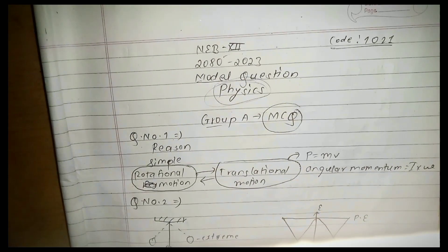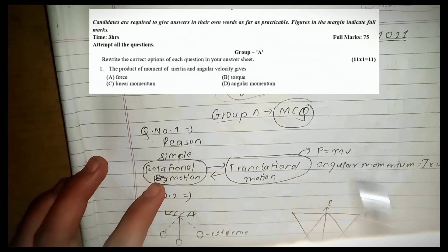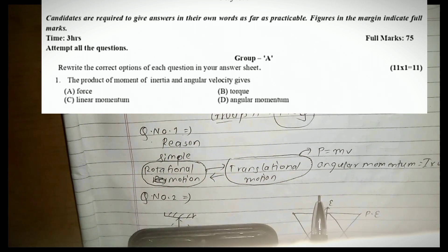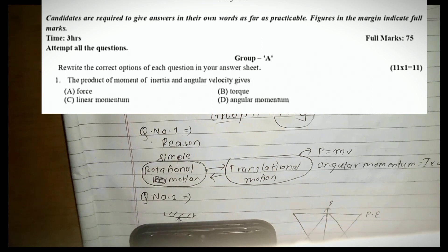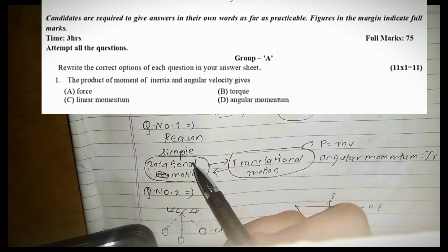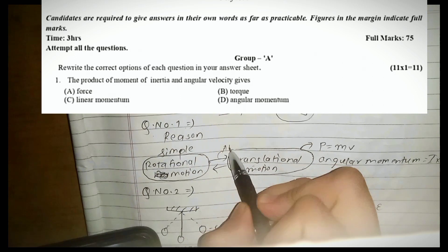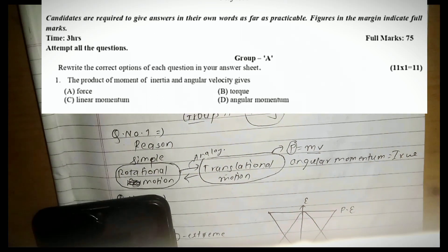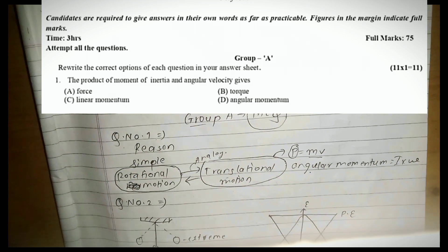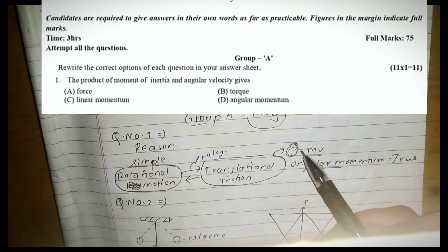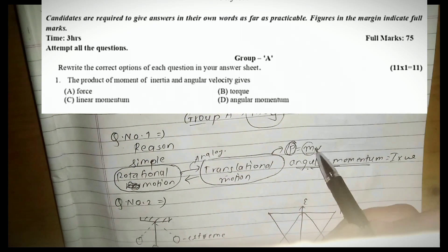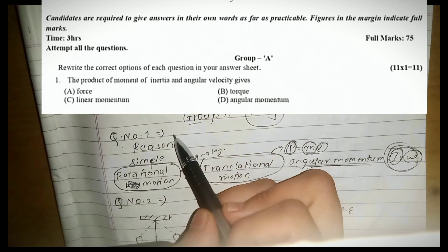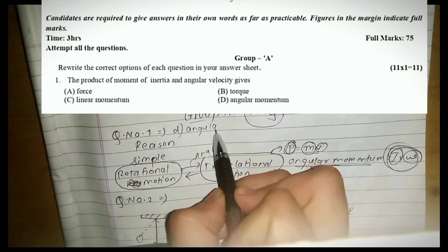Question number one: the product of moment of inertia and angular velocity. In rotational motion, analogous to translational motion — linear momentum is mass times velocity. So angular momentum, by analogy, is moment of inertia times angular velocity. That is the definition of angular momentum.